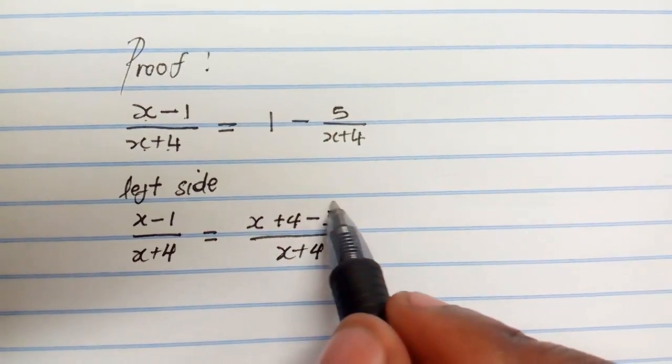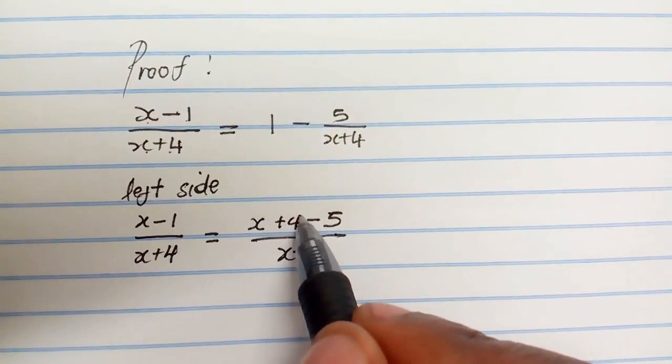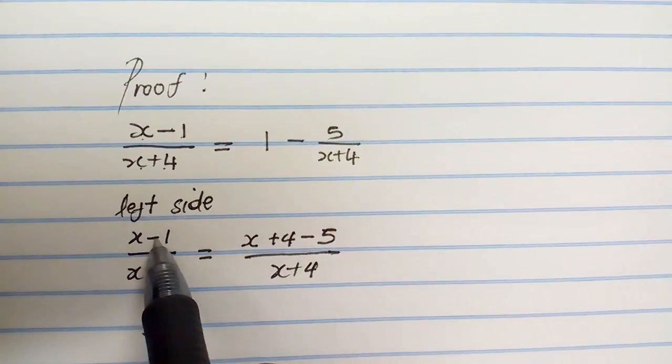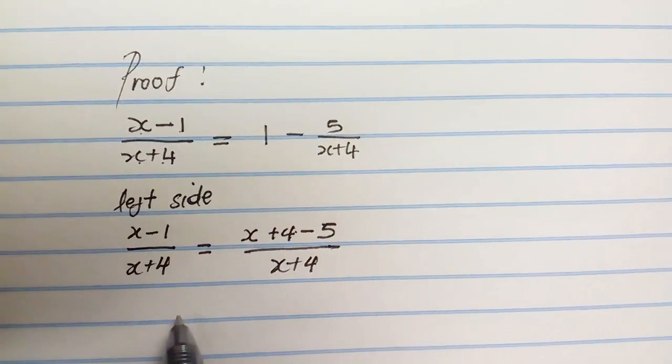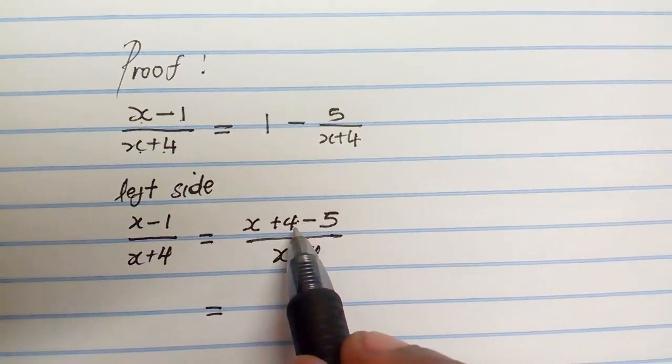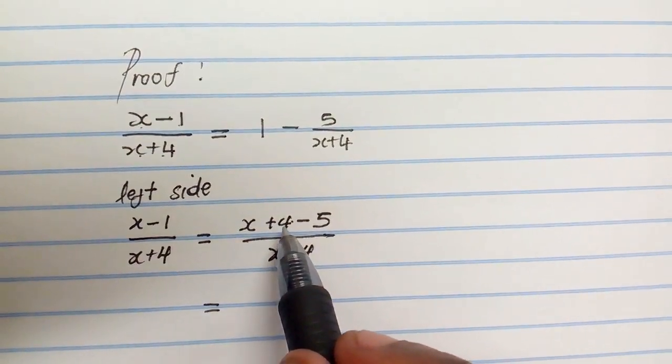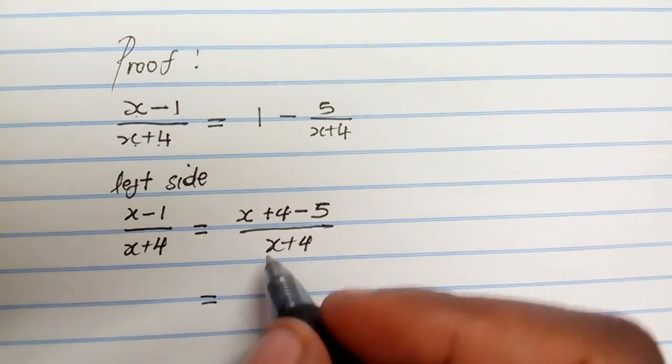So you can see that when you subtract 5 from 4, you still get minus 1. So basically this and this are still the same. And then now what you do is you group x plus 4 together so that you have the same denominator and numerator.